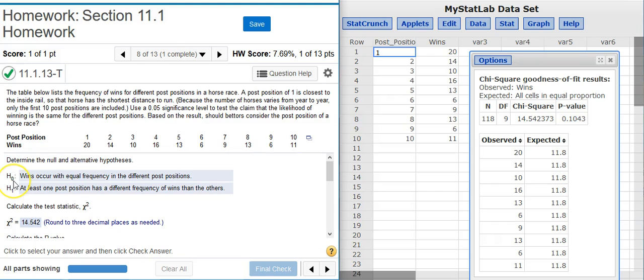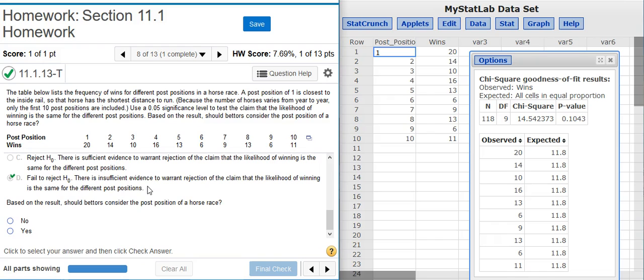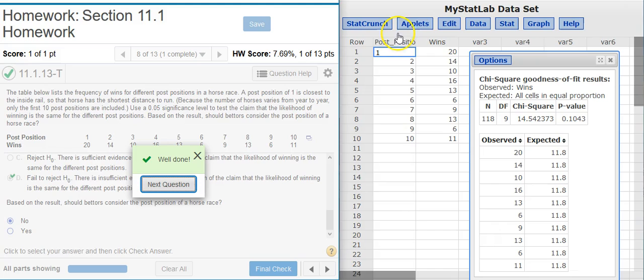Well, scroll back up here and we see that H0, our null hypothesis, is that wins occur with equal frequency. Well, if they're occurring with equal frequency, and this statement is potentially true, then it shouldn't be a consideration when you're placing your bet. So here I'm going to select no. Well done!